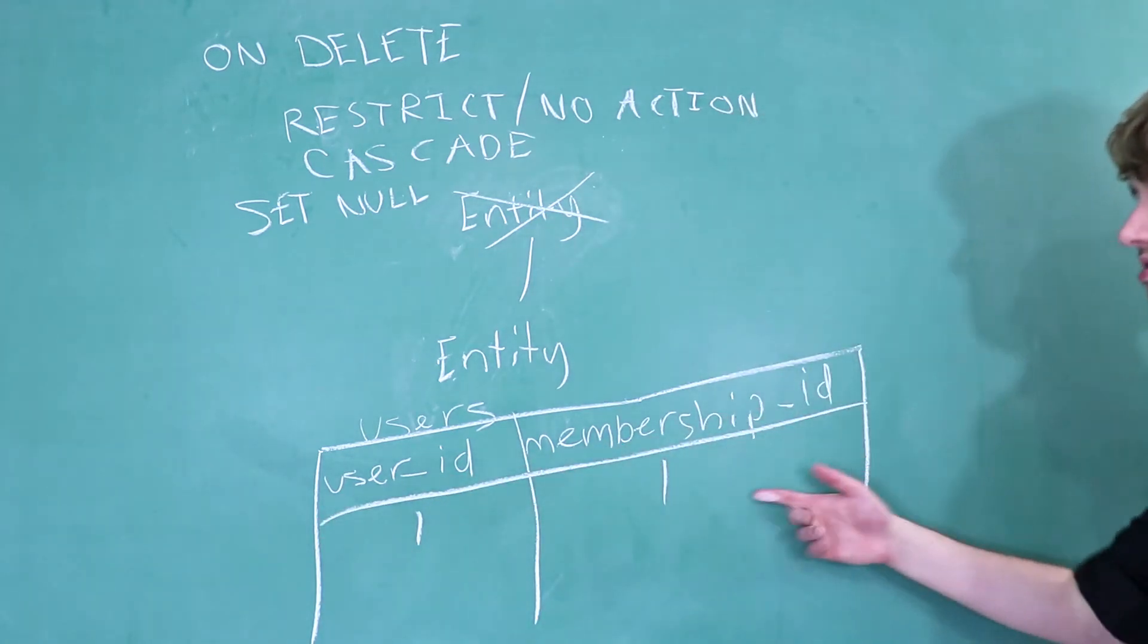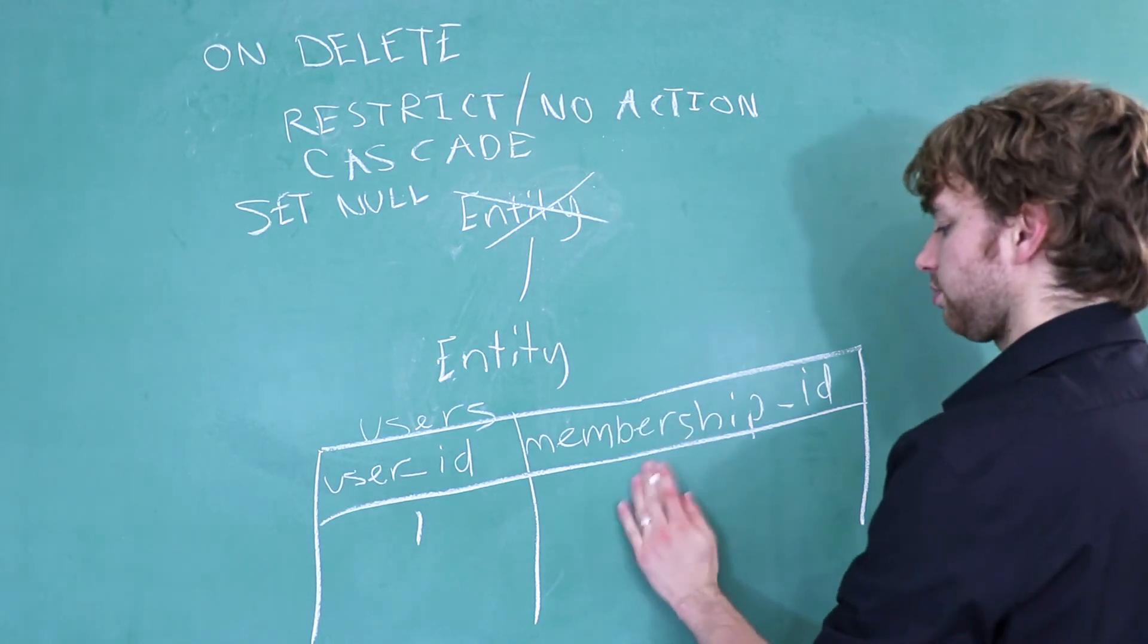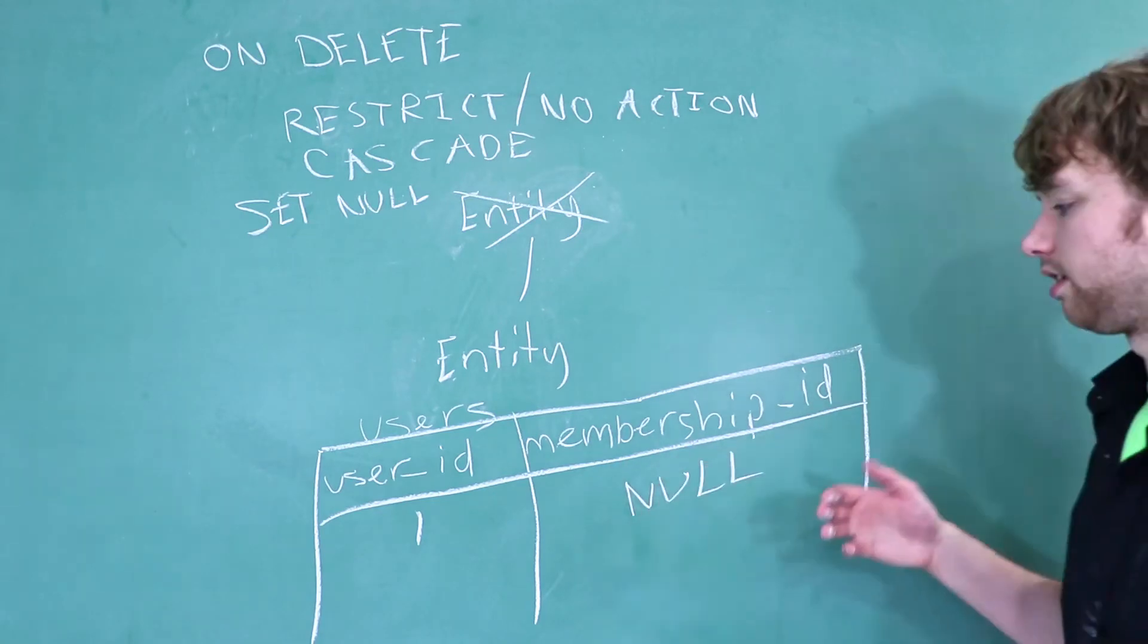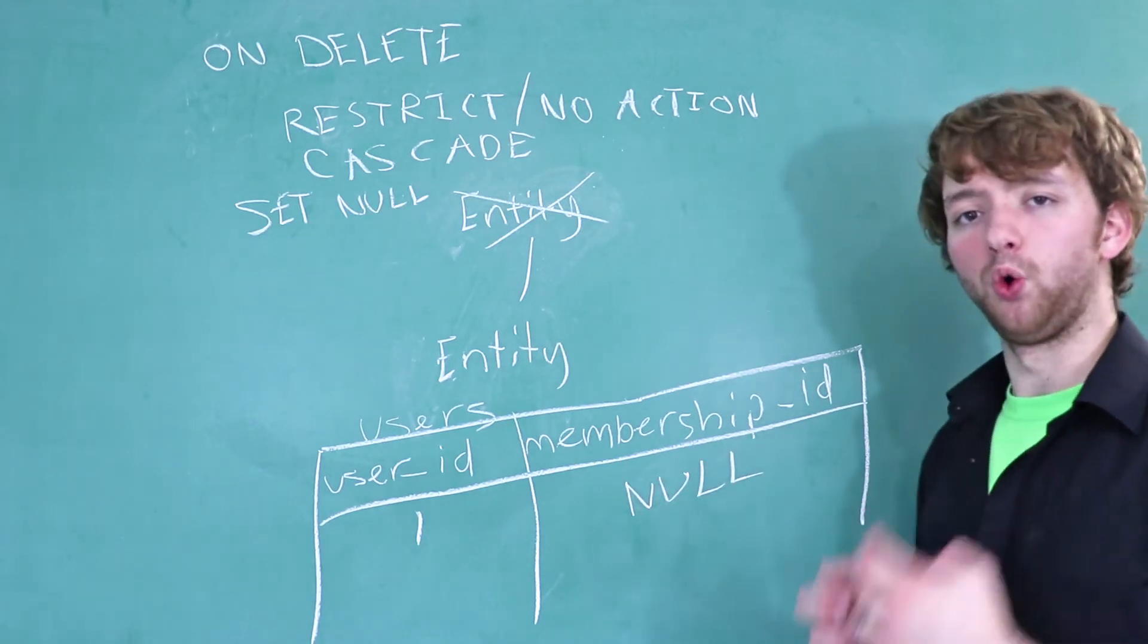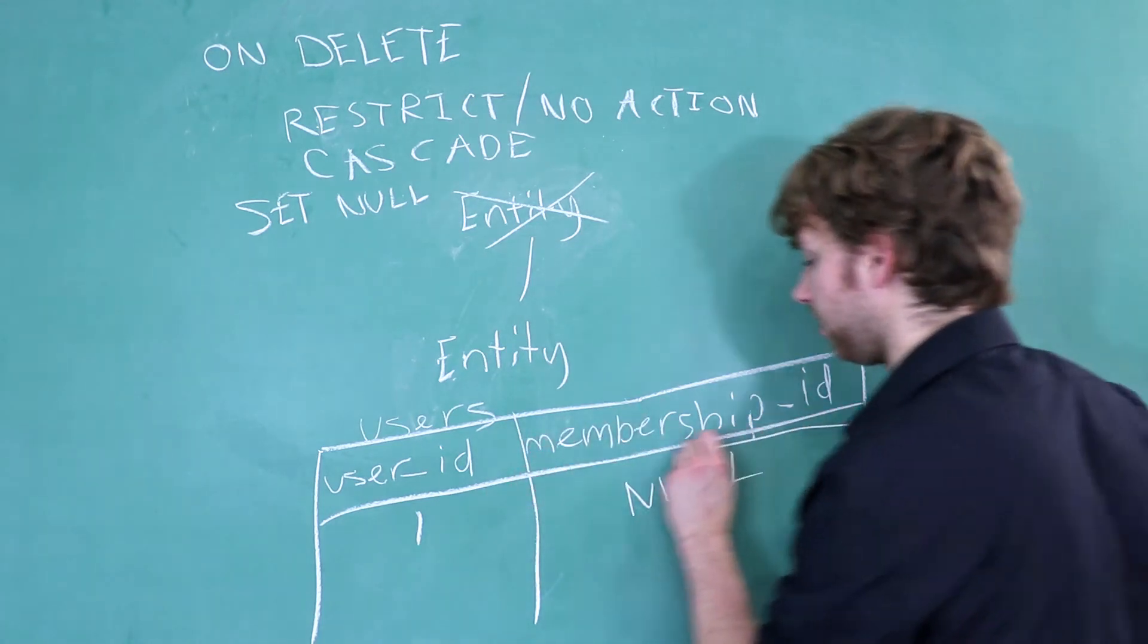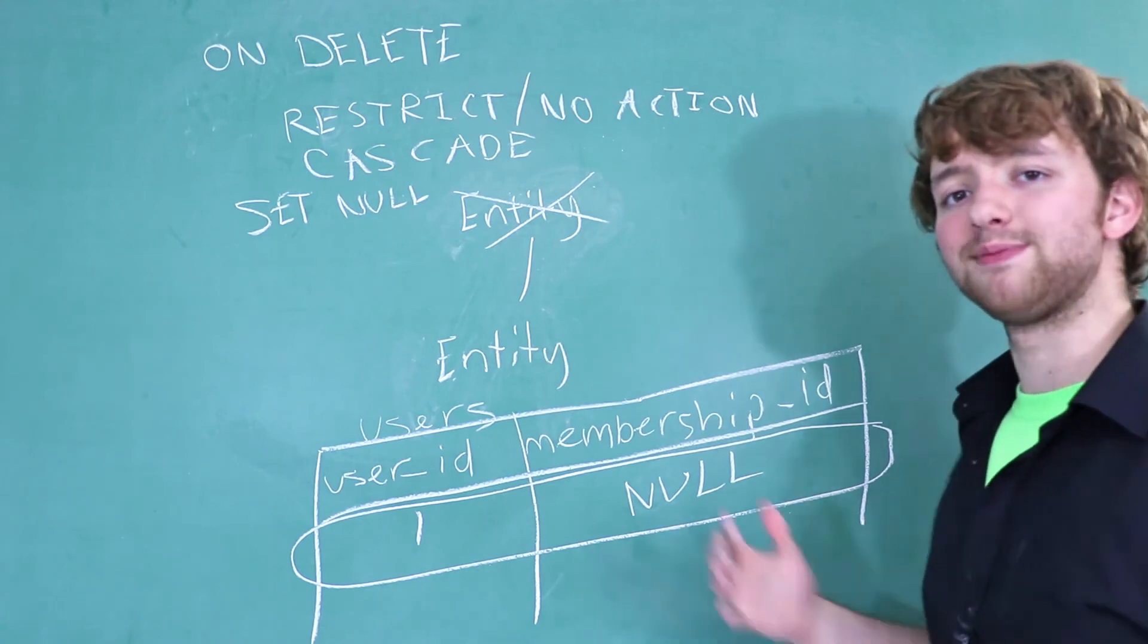Well, over in the membership table, if we deleted the row with this ID, in the user table, this would just be replaced with null. In the user table, this would show up as this. Now this is okay if you allow orphaned children. So this is called an orphan row. This right here. In some situations, it's appropriate to have orphaned rows. Other times, it's not.